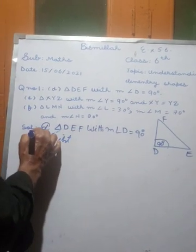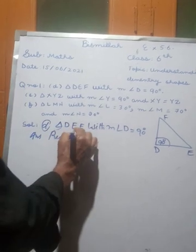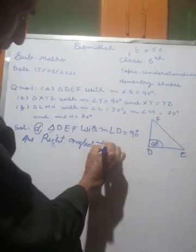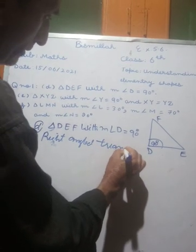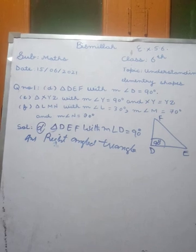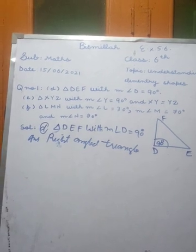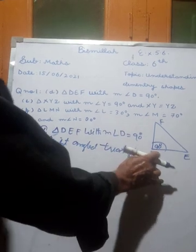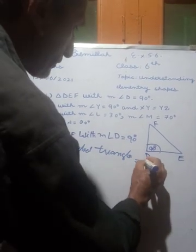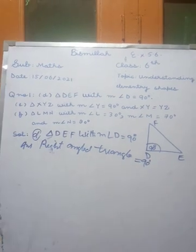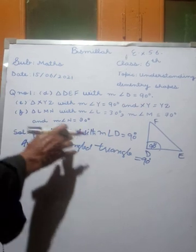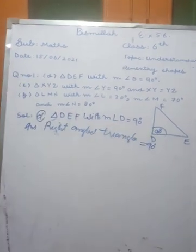Right-angled triangle — a triangle in which one angle is equal to 90 degrees is called a right-angled triangle. A triangle in which one angle is equal to 90 degrees is called a right-angled triangle.